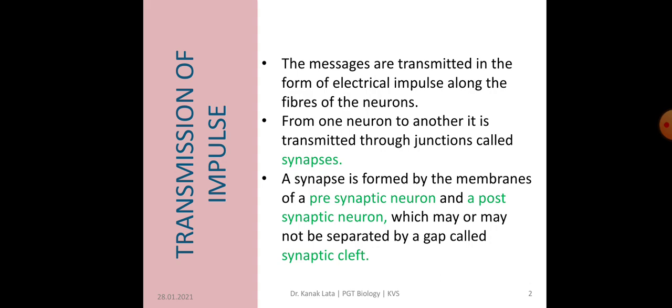First, it is about Transmission of Impulse. The impulse or messages are transmitted in the form of electrical impulse along the fibers, that is axons of the neurons. Impulses are transmitted from one neuron to another neuron through a junction called synapses. Synapse is the close proximity of the axon of one neuron and dendrite or cell body of another neuron.